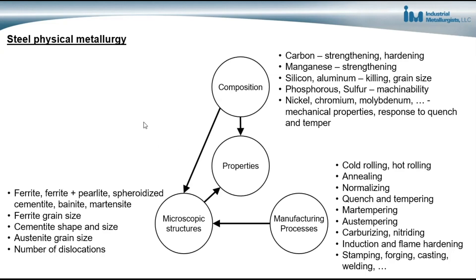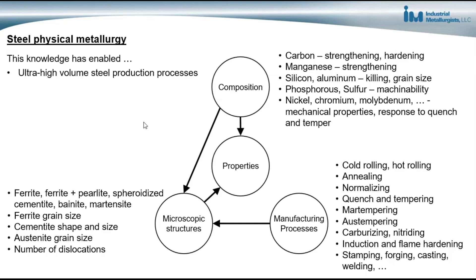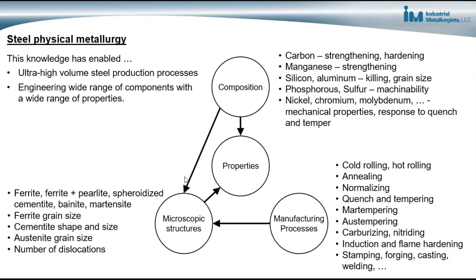What does all this knowledge do for us? Well, this knowledge has enabled two specific things that are critical for our civilization. One is the development of ultra high volume steel production processes. The knowledge of steel metallurgy has enabled development of highly automated processes that are able to produce a tremendous amount of steel every single day, and the steel consistently meets the requirements for the customer's use. It also enables us to engineer a wide range of components with a wide range of properties for a wide range of applications.